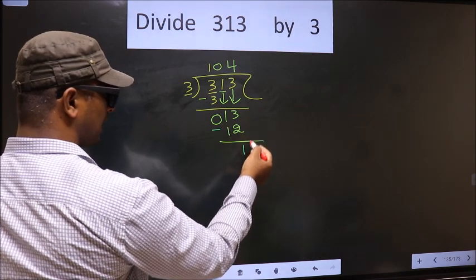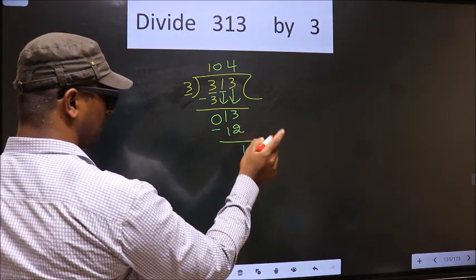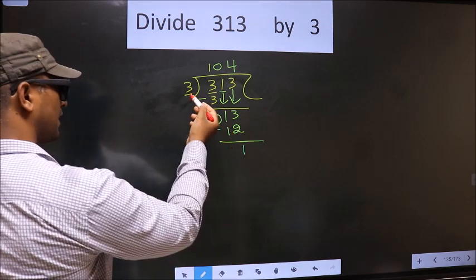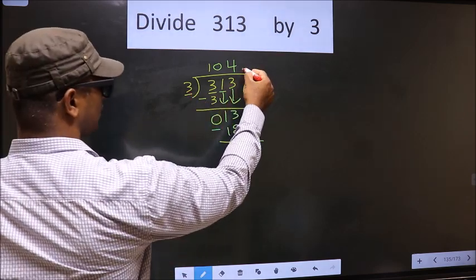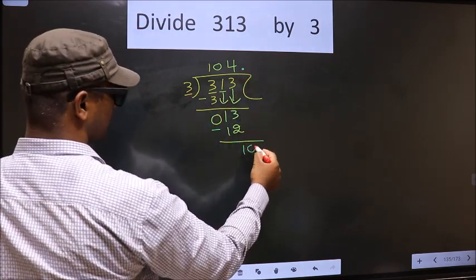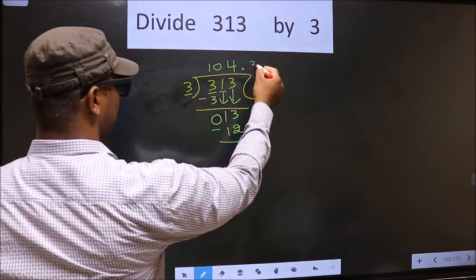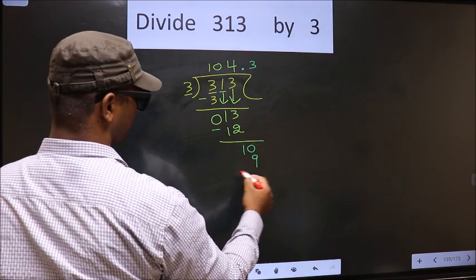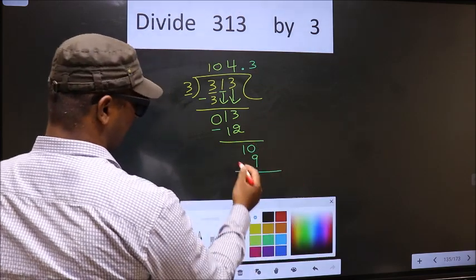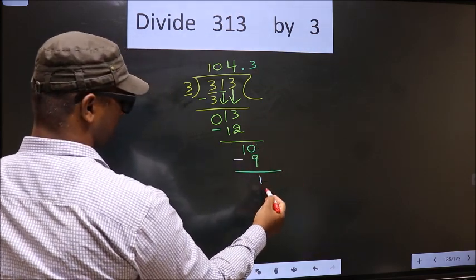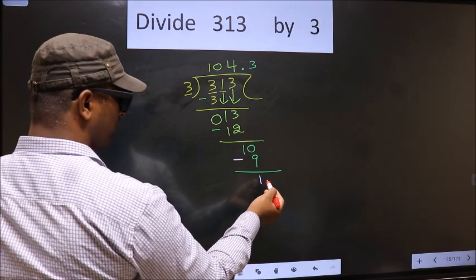Here we did not bring any number down, so 10. A number close to 10 in the 3 table is 3 threes, 9. Now subtract: 10 minus 9 is 1. We got 1 again.